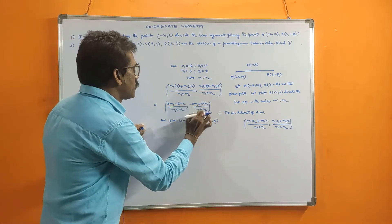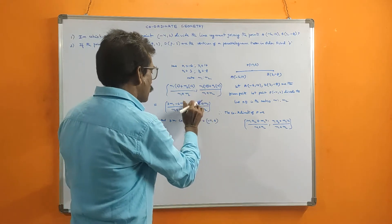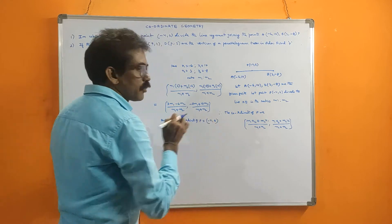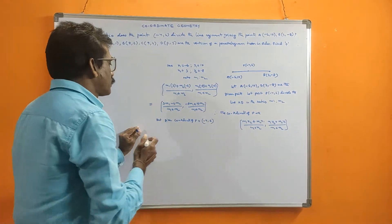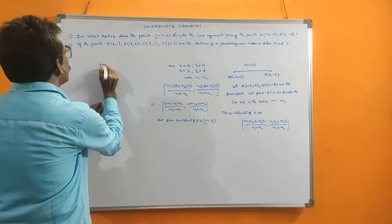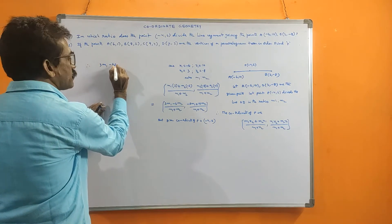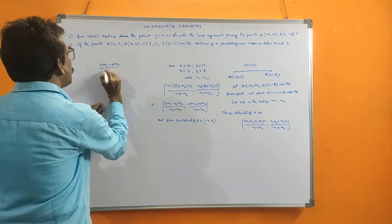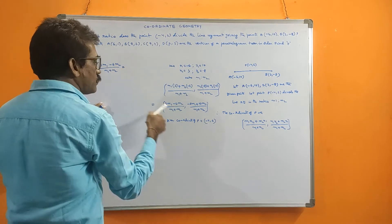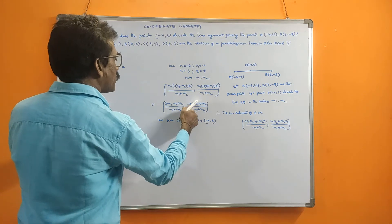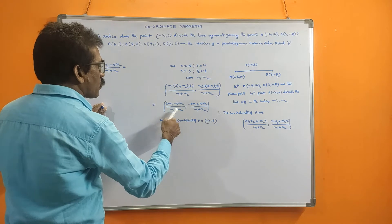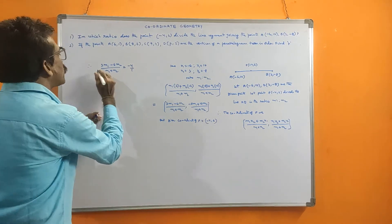We can take the y-coordinate equal to 6 or the x-coordinate equal to -4. I am taking the first one — the x-coordinate. Therefore, 3M1 minus 6M2 divided by M1 plus M2 equals -4. The x-coordinate is -4, which means -4 by 1.